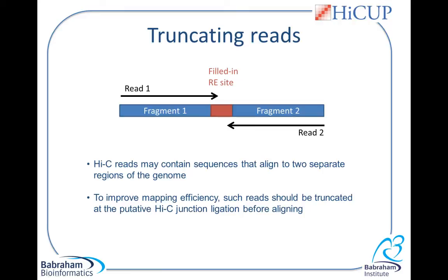However, we can ameliorate this situation by looking for a Hi-C ligation junction sequence. This Hi-C ligation junction is not found in the reference genome, but is a direct result of the Hi-C protocol. By looking for this known sequence, and if it is encountered truncating the read at this point, it is possible to improve mapping efficiency.